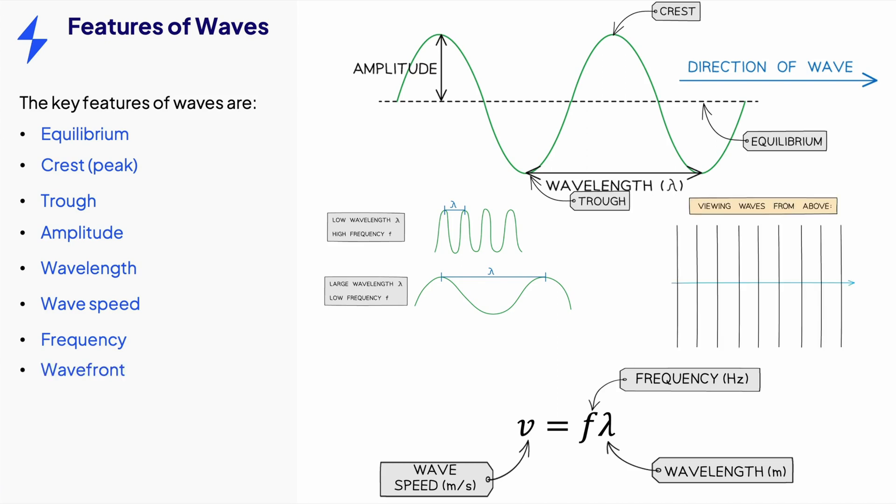Wavefronts are a surface containing points affected in the same way by a wave at a given time, such as crests or troughs. Think of seeing water waves from above, you will just see a series of vertical lines that move in the direction of the wave. The distance between wave fronts gives the wavelength of the wave.